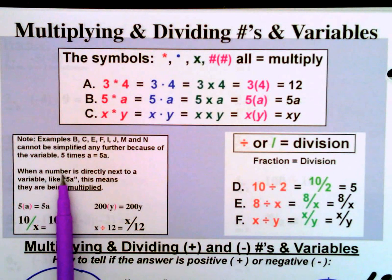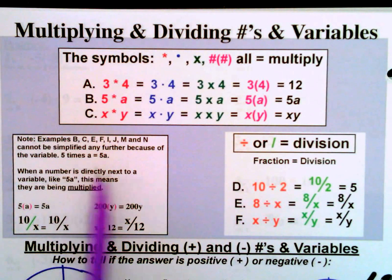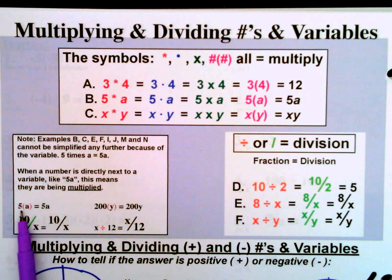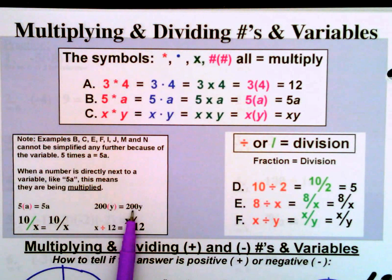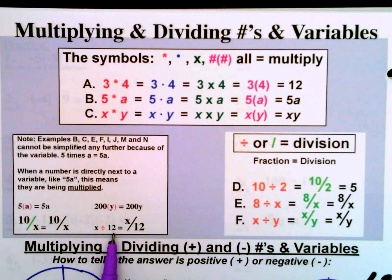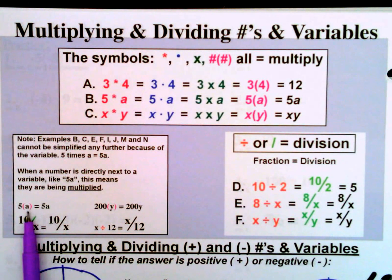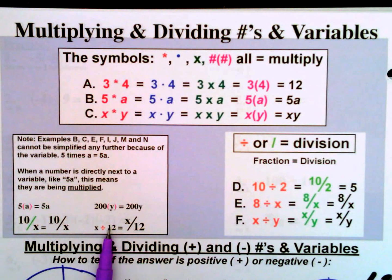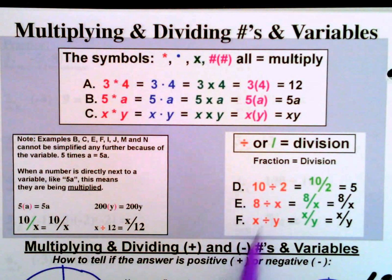Anytime you're multiplying or dividing a number by a variable, just write them together. Five times a is just 5a, or 200 times y is just 200y. And for division: 10 divided by x is just 10 over x, or x divided by 12 is just x over 12. We can't do anything further unless we have an actual value for the variable.